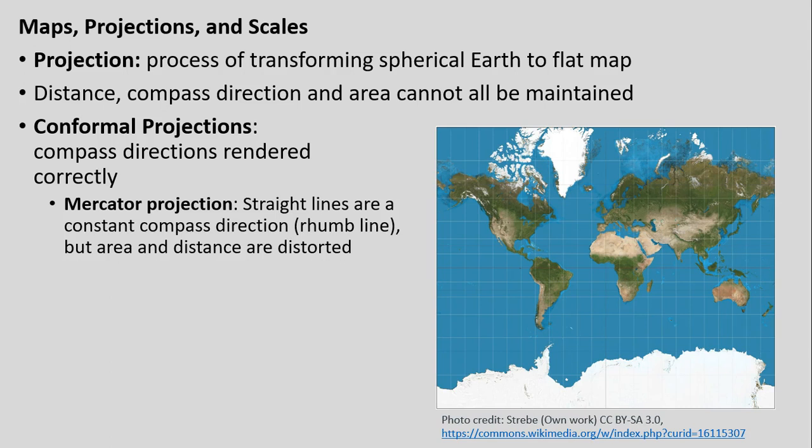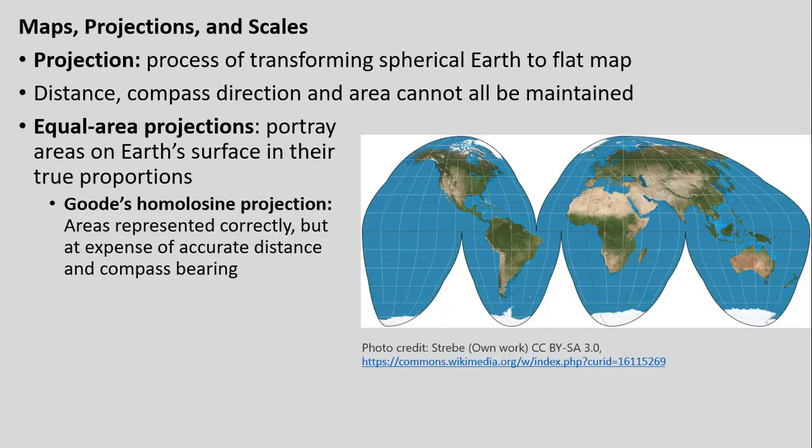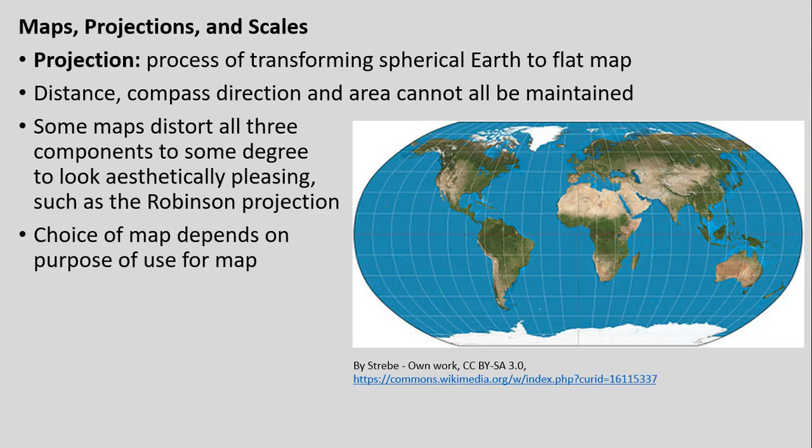You're keeping one thing while sacrificing another. Equal area projections focus on representing areas as accurately as possible, but again oftentimes sacrifice distance and compass bearing.